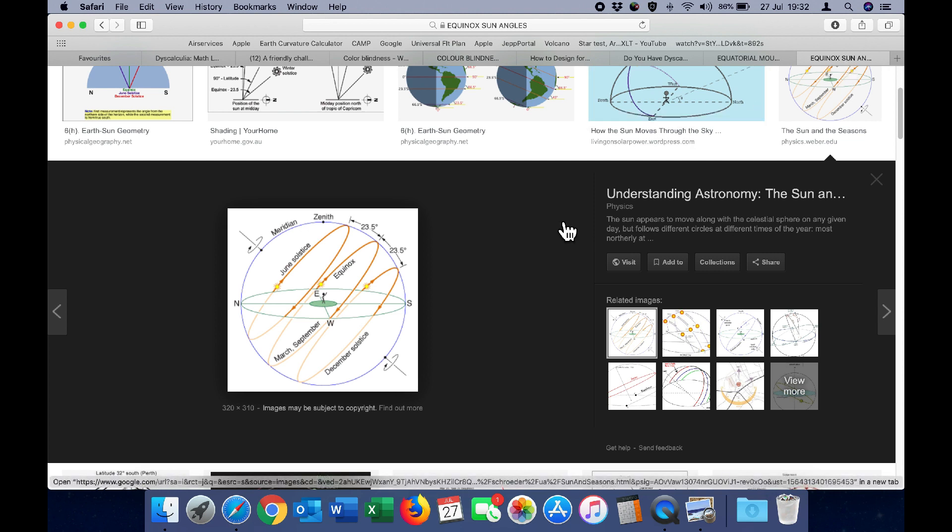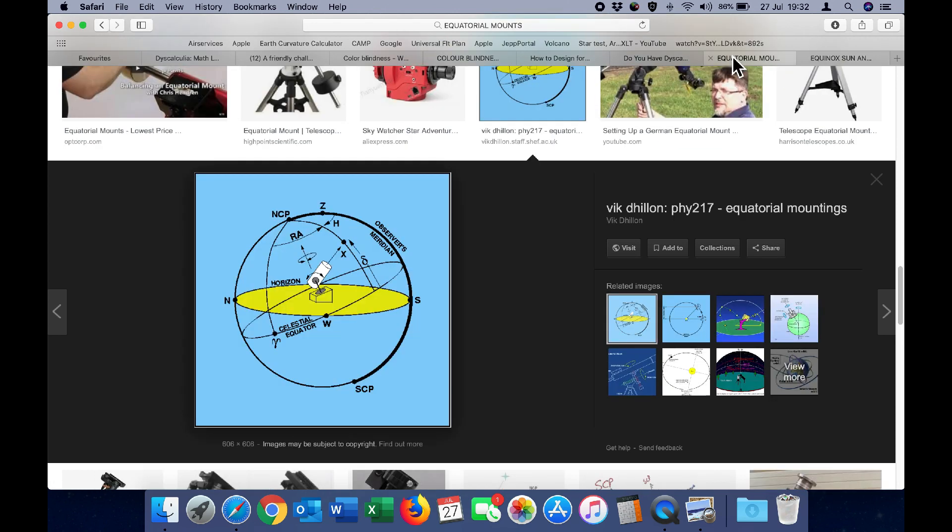But when you explain that to a flat earther, they simply don't see it. Similarly, with the equatorial telescope mount, the polar alignment angle matching the latitude, and the ability to track any star in the sky that is visible with a single axis of rotation at a constant rate again confirms that the earth is a ball. But once more, the flat earther is incapable of seeing the geometry.